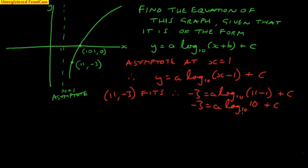Log to base 10 of 10 is 1. It's the same base and the same number, and we get from that that minus 3 equals a plus c. That's my first equation.